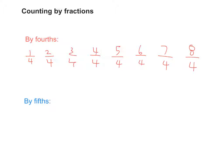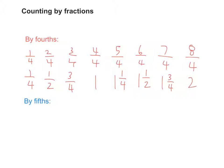Let's try: one fourth, one fourth. Two fourths — one half. Three fourths. One. One and one fourth. One and a half. One and three fourths. Two. See how sometimes we can skip count first and then go back and simplify? Let's try the same thing with fifths.